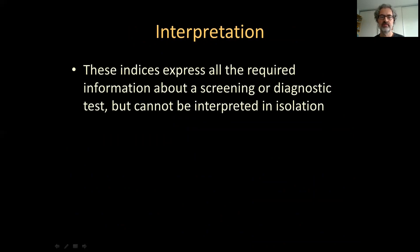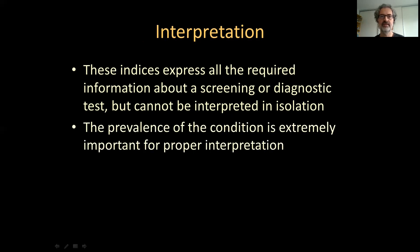These four indices express all the information there is about a screening or diagnostic test, assuming that there is a reference classification that can be considered to be true. These indices cannot be interpreted in isolation. There is a very important variable we haven't considered yet: the prevalence of the condition — the proportion of the population that actually has the condition we're trying to detect. In order to evaluate a test, this is a very important parameter.